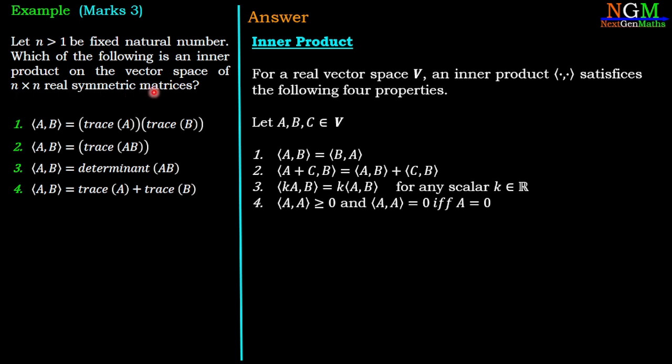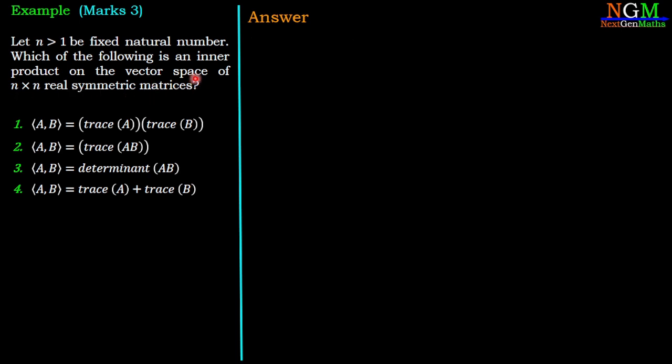We have four options with four different definitions of inner product on n × n real symmetric matrices vector space. So we will check all the options one by one. For that we will use counter example method. First example: A = [1, 0; 0, -1] is a real symmetric matrix, so it is an element of the given vector space. Now trace(A) = 1 - 1 = 0.